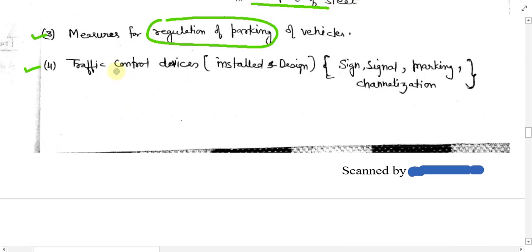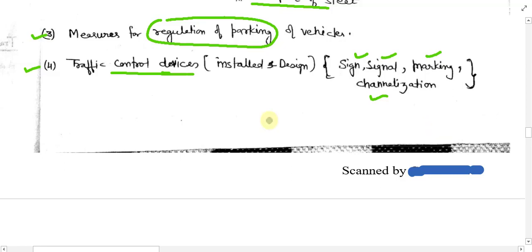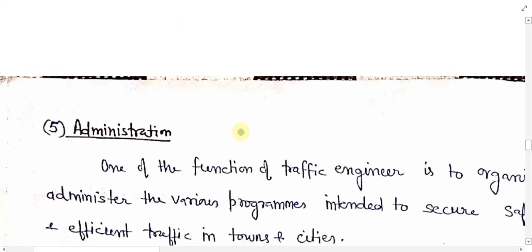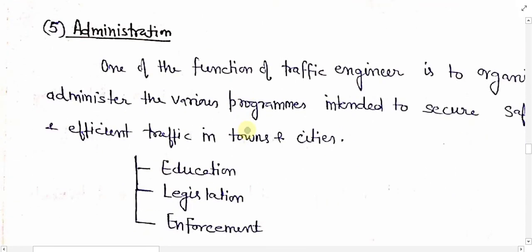The fourth step is traffic control devices. Traffic control devices include installed signals, and these are designed and evaluated as flow fluctuates. Inside this fourth step, signs, signals, markings, and generalization are all to be evaluated.